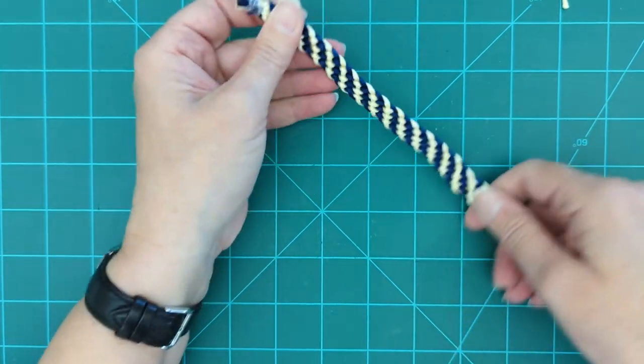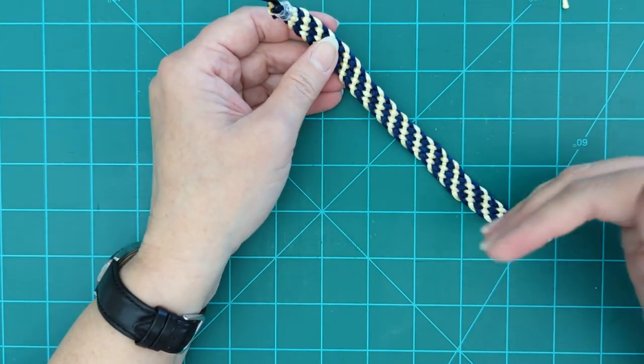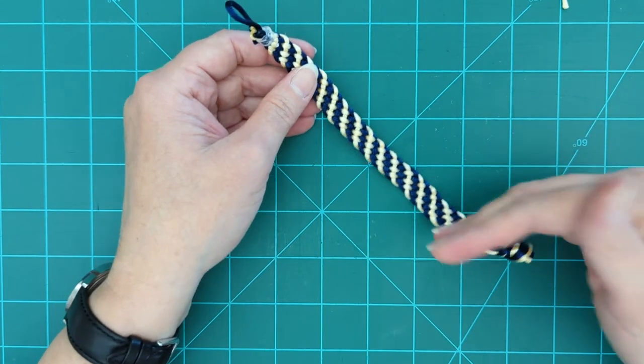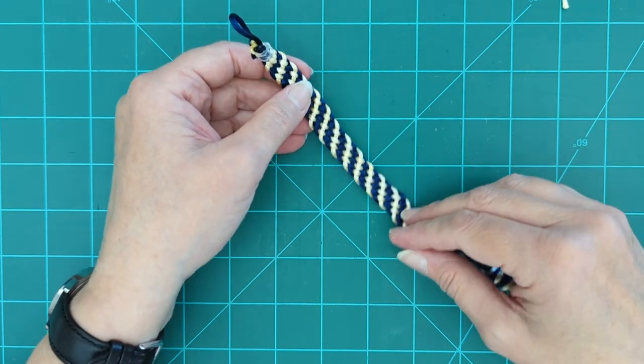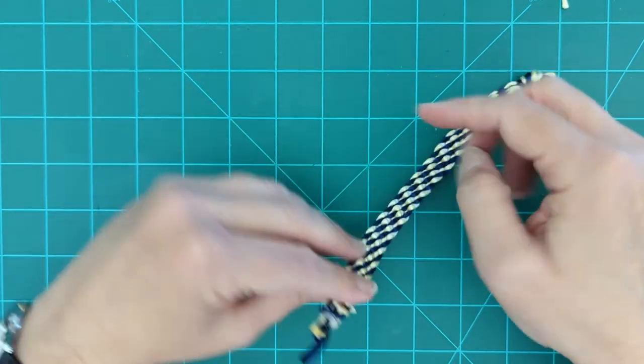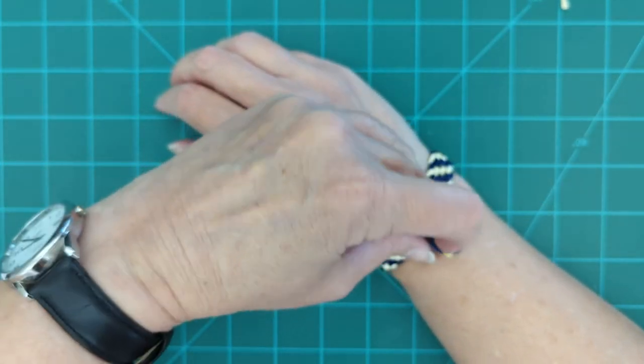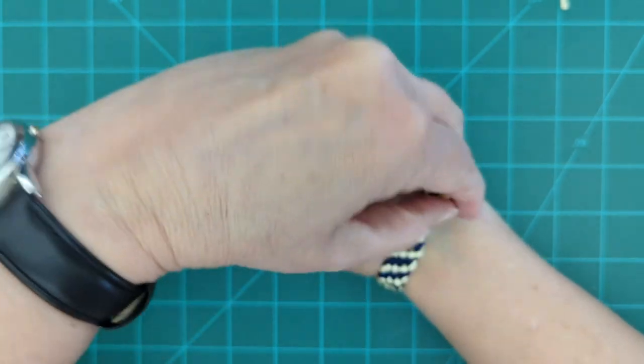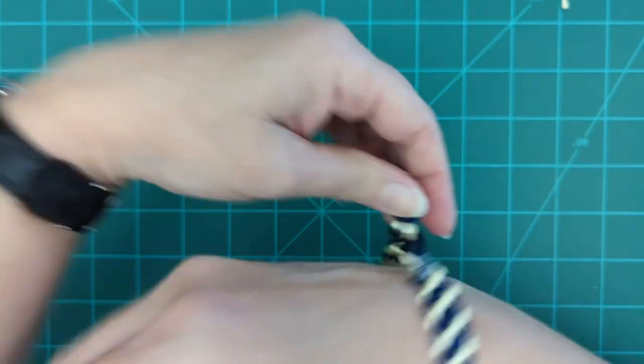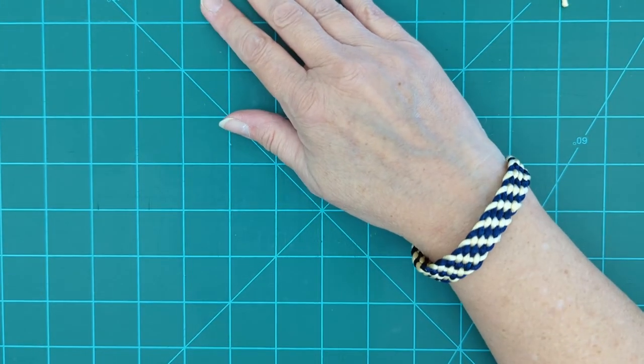Again, you want to be careful with that. Just quick passes with the flame. And if you're doing this with other cord, test it first on a little piece to make sure that it just melts and doesn't burn. But once you've got that done, you just wrap it around your wrist, slide the knot through the loop. And there you have it.